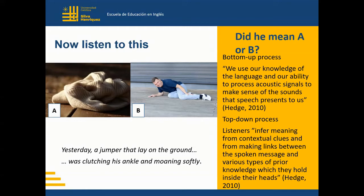However, the second section — 'was clutching his ankle and moaning softly' — is key to indicate that we are no longer referring to a piece of clothing we call jumper, mainly because of our understanding of human anatomy, indicating that people are the ones who have ankles and are capable of actions such as clutching while emitting sounds to express pain. The second section activates our schematic knowledge, but also our systemic one, especially when noticing the word 'his' refers to a male sports person, confirming that picture B is the correct answer.